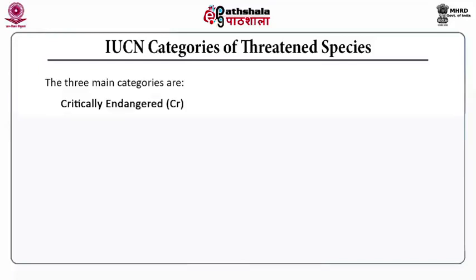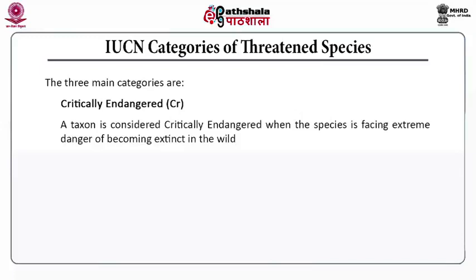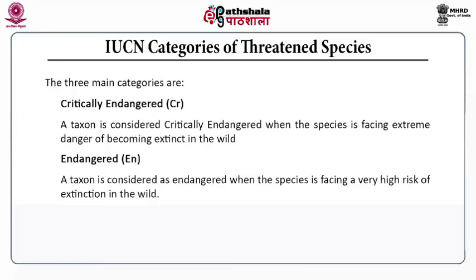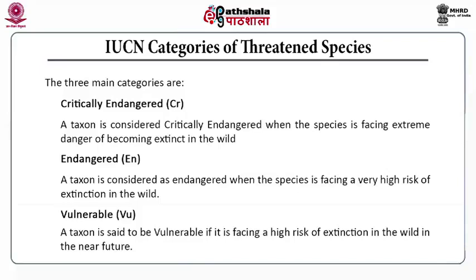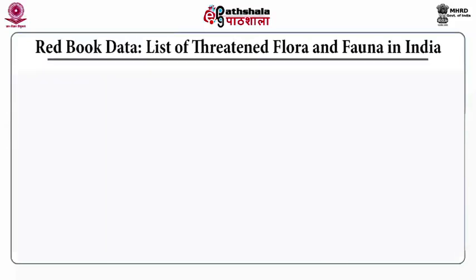IUCN classifies threatened species under three categories. First are critically endangered — a taxon is considered critically endangered when the species faces extreme danger of becoming extinct in the wild. Then comes endangered species, which are those facing a very high risk of extinction in the wild. Thereafter comes vulnerable species — those facing a high risk of extinction in the wild in the nearby future.